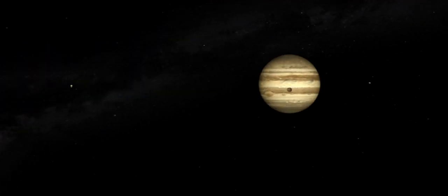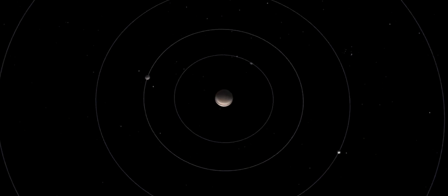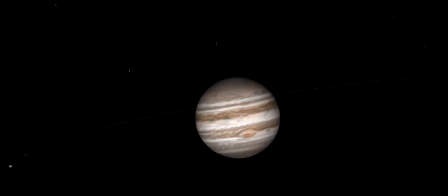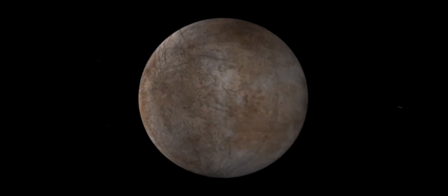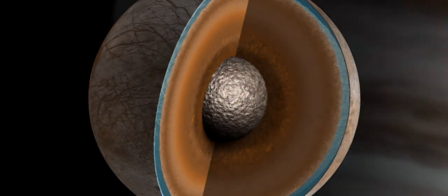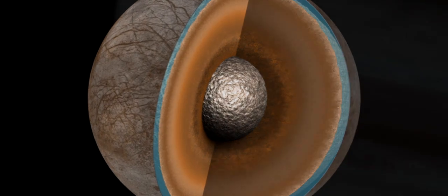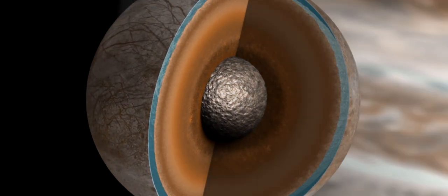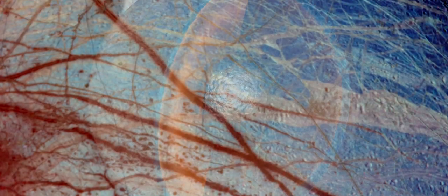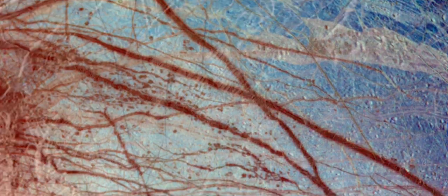The reason that Europa has liquid water is because it's orbiting Jupiter, and the tidal tug and pull causes Europa to flex up and down. All that tidal energy turns into mechanical energy, which turns into friction and heat that helps maintain this liquid water ocean beneath an icy shell.